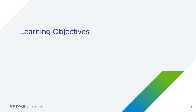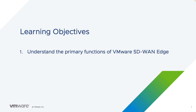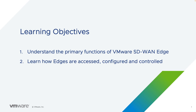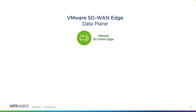In this video, we'll cover the VMware SD-WAN Edge. We'll get to know the primary functions of edge devices, and we'll learn how SD-WAN edges are accessed, configured, and controlled. The VMware SD-WAN Edge is a network and security device that consolidates a lot of individual networking and security components that are traditionally found at remote site locations into a single, easy-to-manage device.